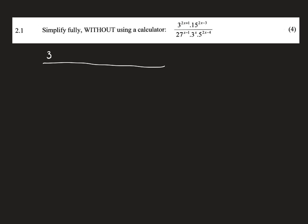I've got 2x plus 1 as an exponent, and then 15 becomes 3 times by 5. On the outside of the brackets, I am raising it to the power of 2x minus 3. In the denominator, 27 is the same as 3 cubed, and I'm raising that to the power of x minus 1. Then 3 to the power of x stays the same because the base is already a prime number, and the same thing with 5 to the power of 2x minus 5.